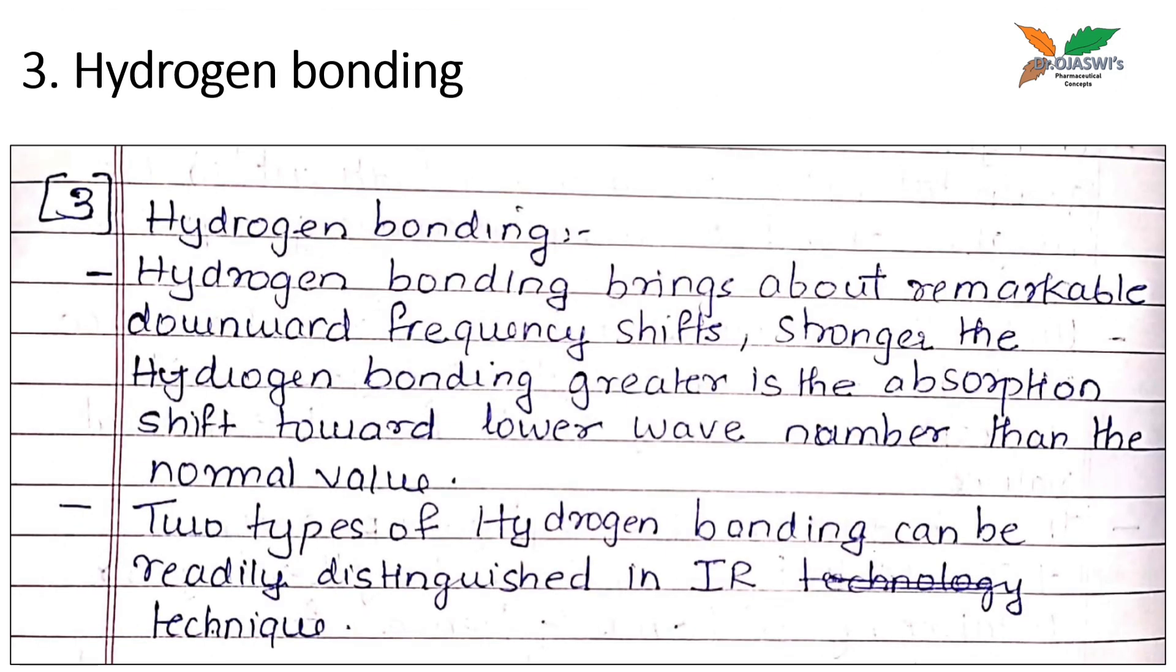Now, coming to the third factor, hydrogen bonding. Hydrogen bonding changes the position and shape of IR absorption band. Hydrogen bonding shifts the vibrational frequency to the lower value. Stronger the hydrogen bonding, greater the absorption shift towards the lower frequency from the normal value. It means that if hydrogen bonding increases, absorption frequency will decrease.